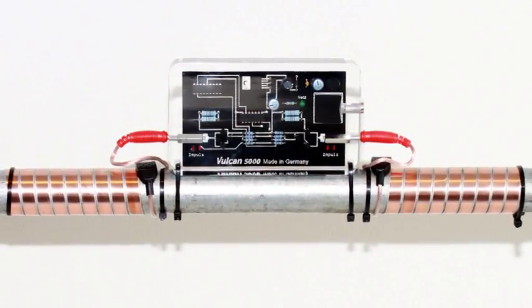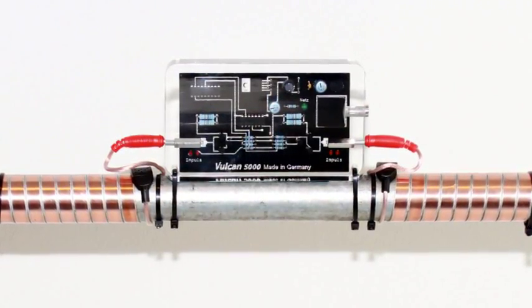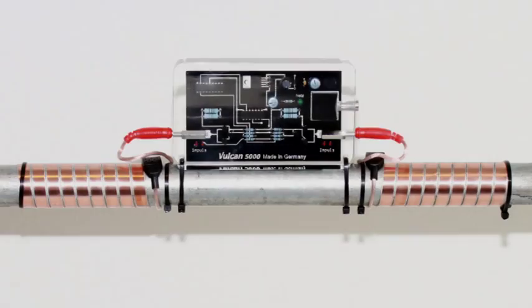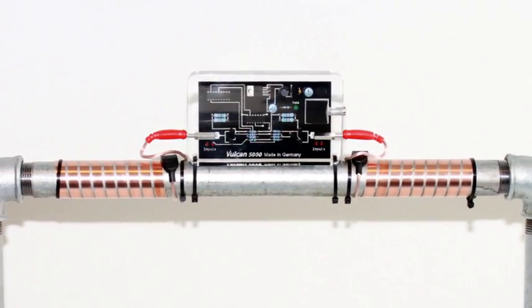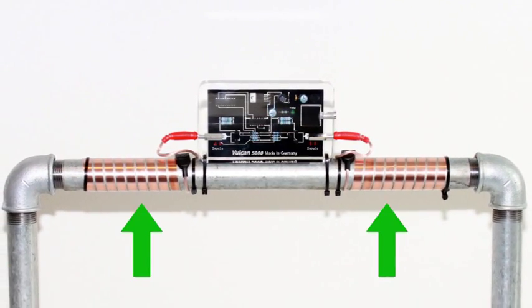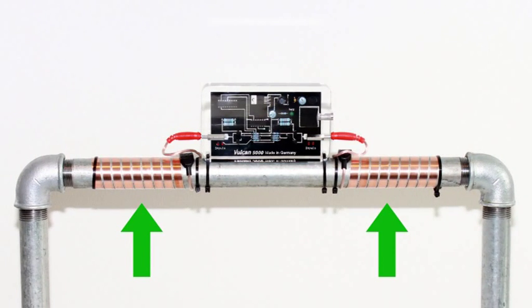Installing your Vulcan is very easy and takes about 10 minutes. You do not need any tools. When you have a lot of free space on your pipe, the most common way is to put the electronic block in the middle first. And then the impulse bands are placed on the right and the left of the block.